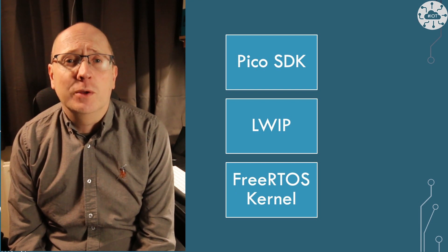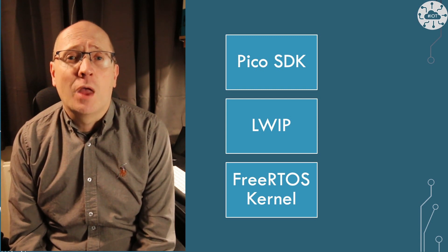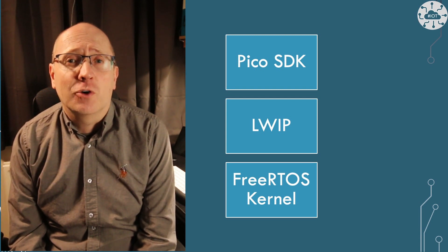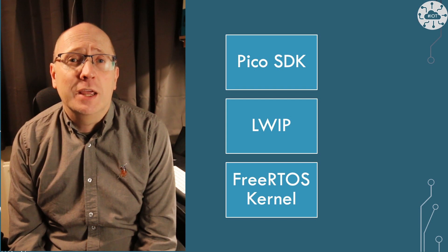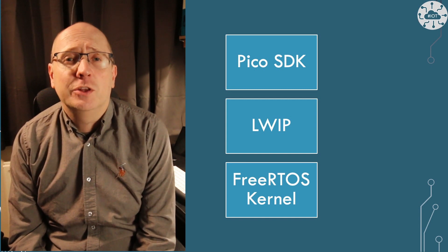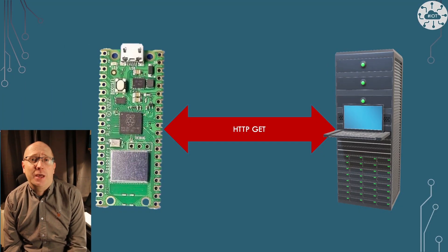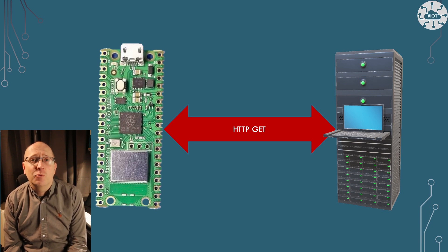In this video I'm going to talk through socket communication using the LWIP library that comes with the Pico SDK. To operate sockets easily we also need a multitasking framework, so I will also use FreeRTOS. The example will do an HTTP GET from a web server that serves a web page, and we can then print the results on standard IO on the Pico. So let's get going.